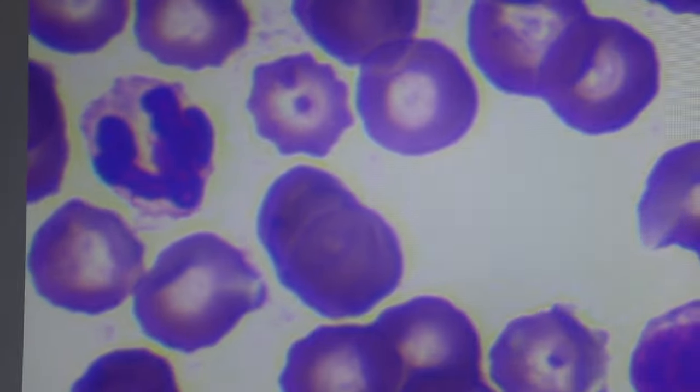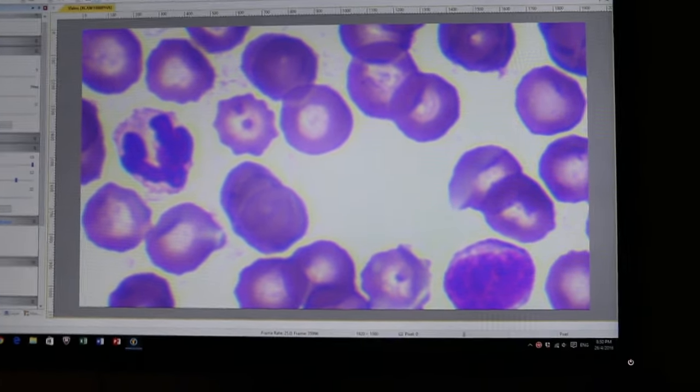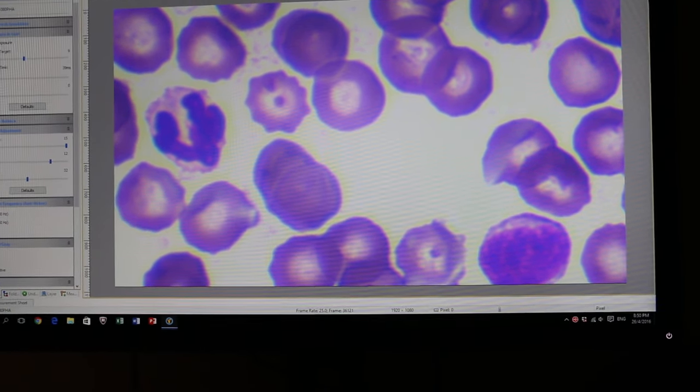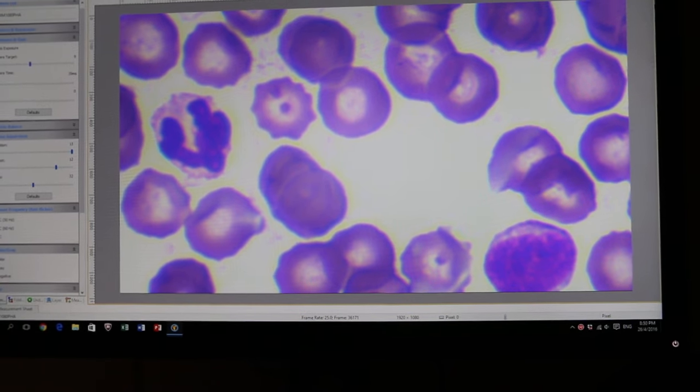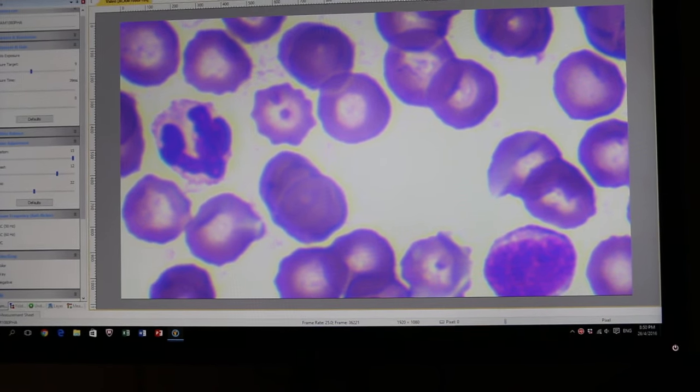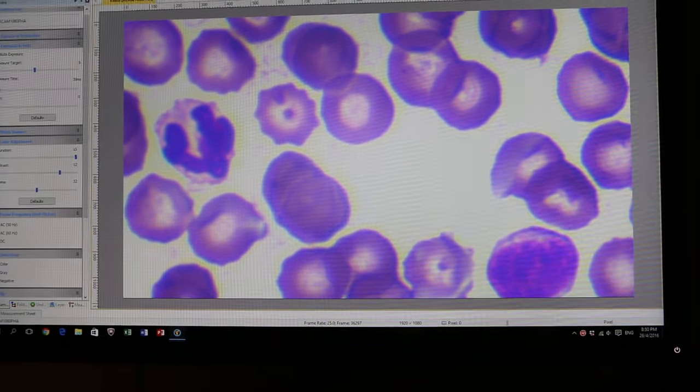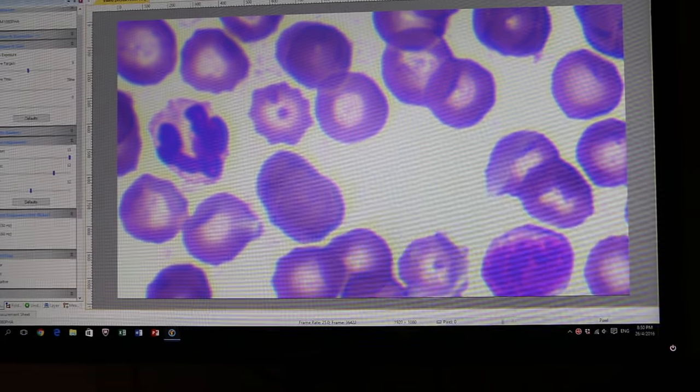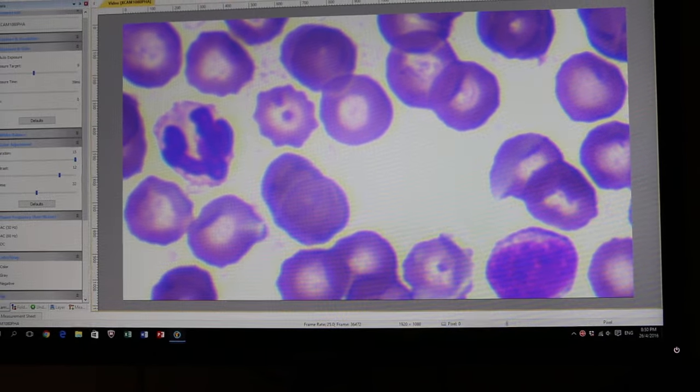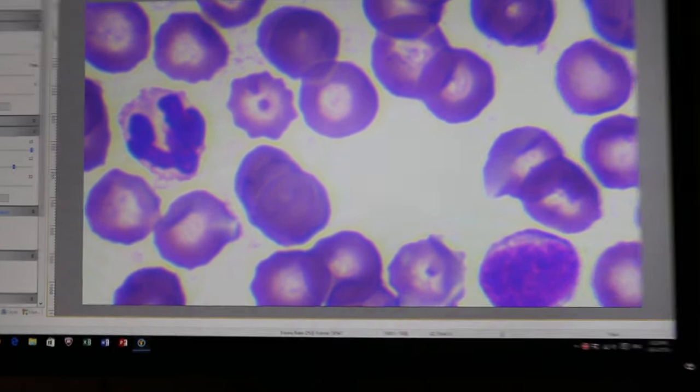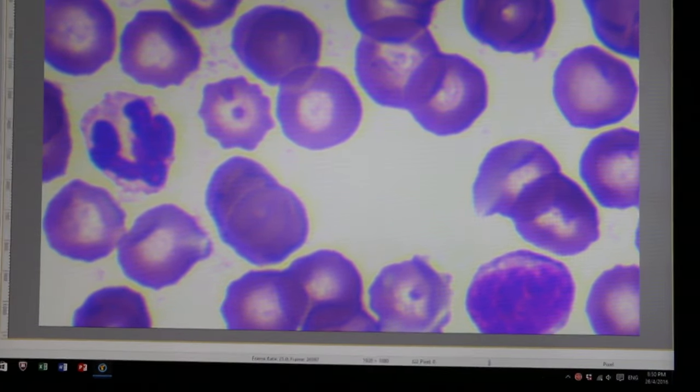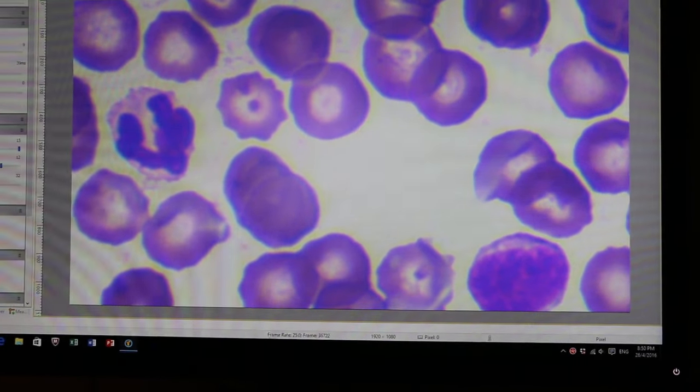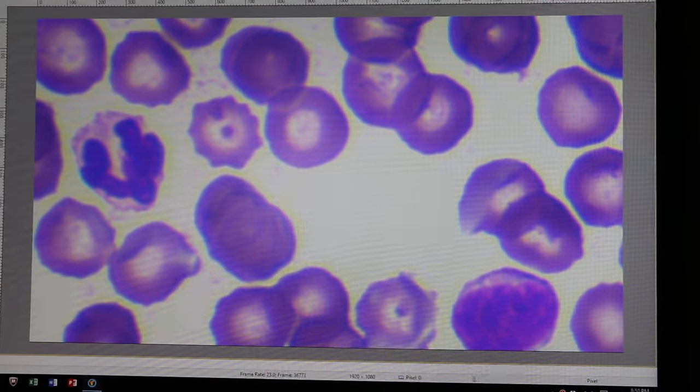Just complete the blood smear examination of babesia canis in the 1 year old male poodle, which suffered from anemia and thrombocytopenia on April the 9th. This blood smear is taken 14 days after April 23rd, 2 weeks after the first injection of Imizol. And as you can see,